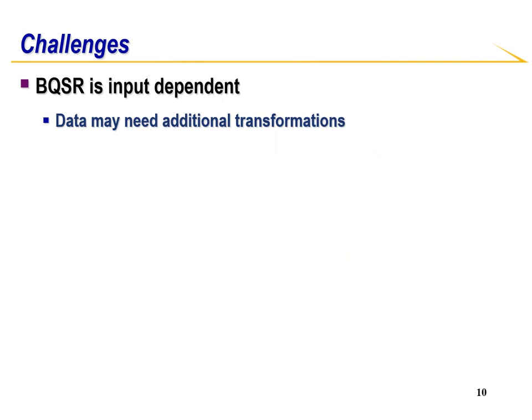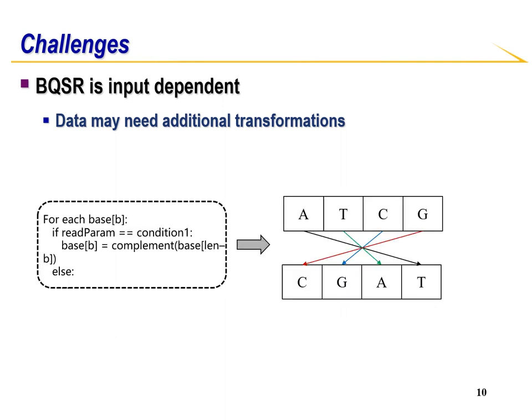Another challenge is that BQSR has many control flow dependencies. As an example, let's take a look at this code snippet. If the read has a certain characteristic, the code needs to find the complement of the base and store it in reverse order; if not, do something else. If this were to be accelerated on a GPU, there would be branch divergence, which would cause instruction replay.